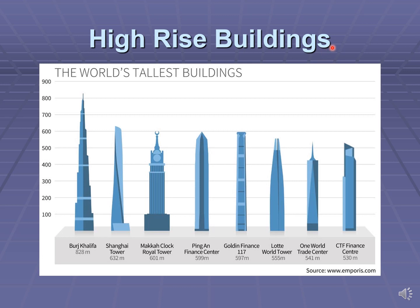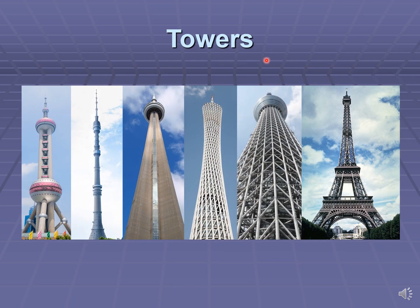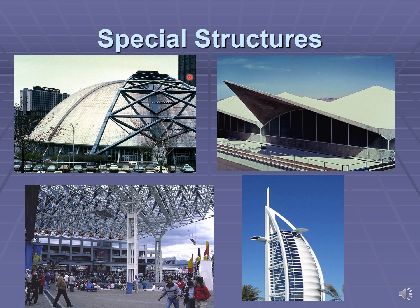The structural engineer designs high-rise buildings — these are the world's tallest buildings, and the Burj Khalifa is presently the tallest building in the world. The structural engineer also designs horizontal structures like bridges, using various forms: arches, suspension bridges, truss bridges, and cable-stayed bridges. The structural engineer erects tall and high-rise towers made of various materials from concrete to steel. The structural engineer also designs special structures of various shapes: domes, flat plates, and other sophisticated shapes.